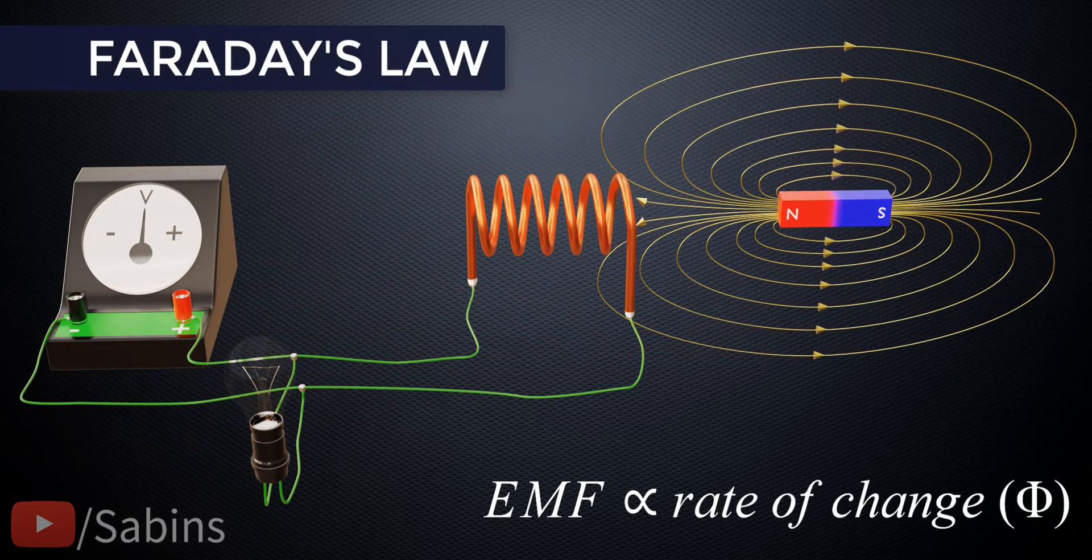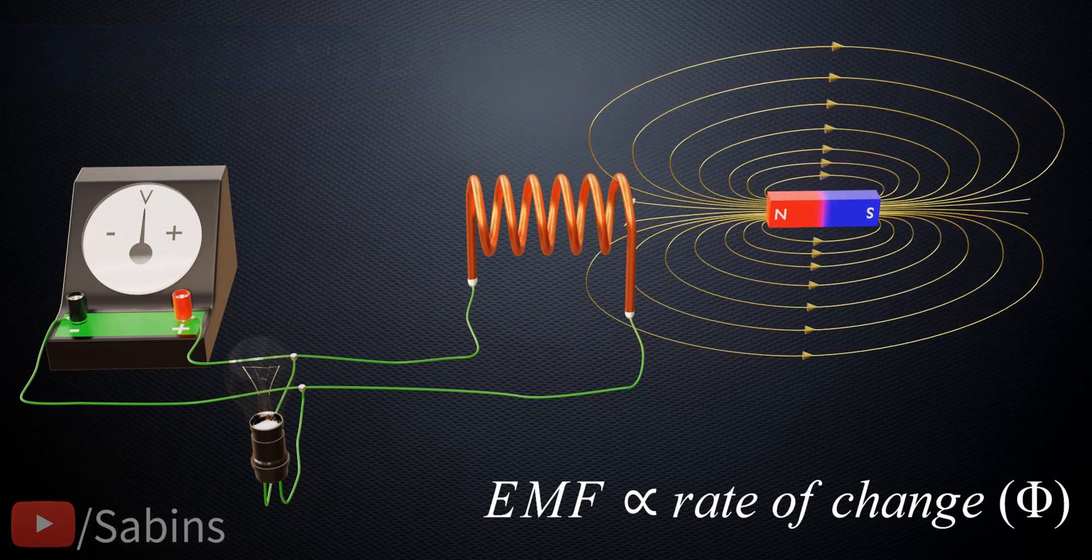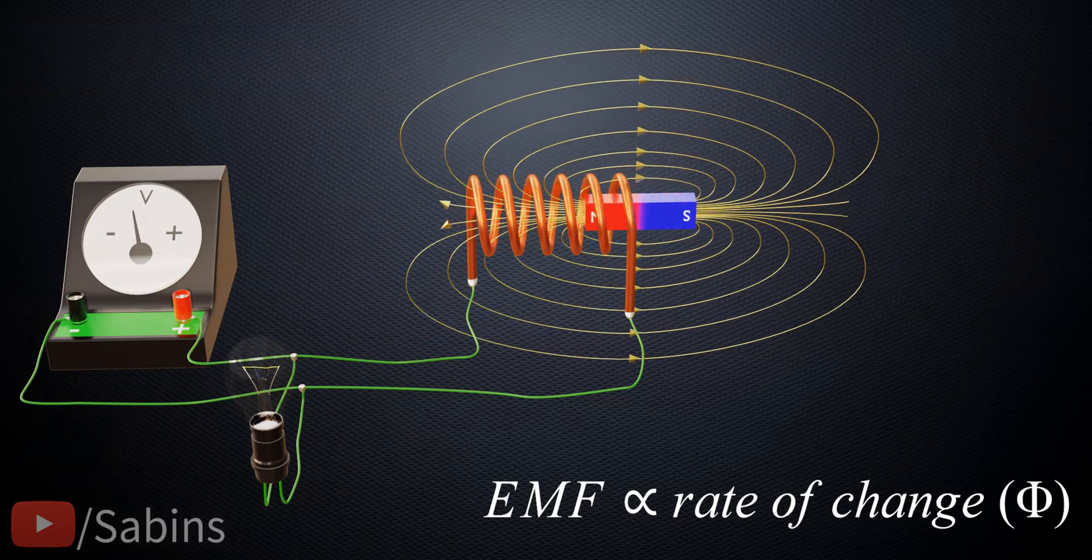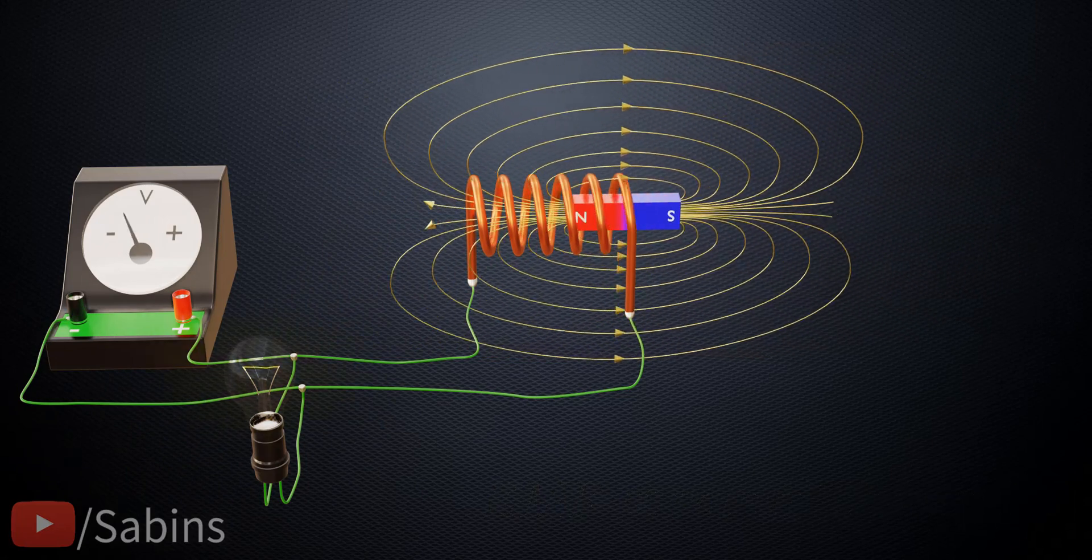Here you can see that the permanent magnet approaches or leaves the loop. It will induce an EMF across it. This result occurs because the movement of the permanent magnet causes a varying magnetic flux on the loop.